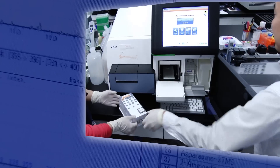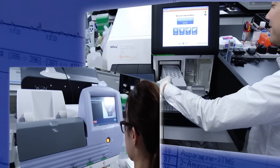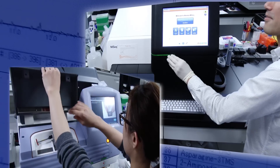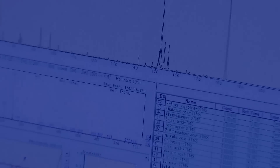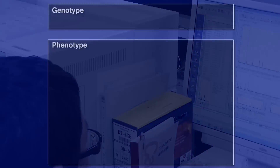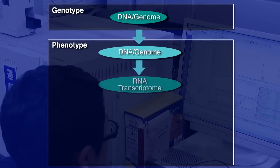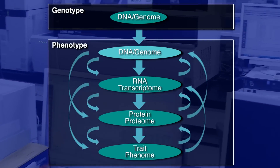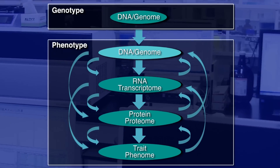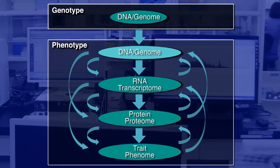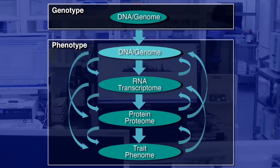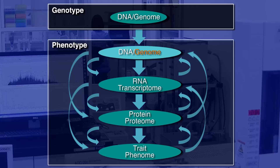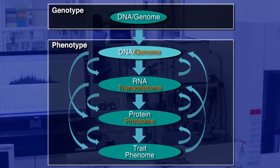These days, various high-throughput experimental technologies enable us to evaluate all of these variations in multiple layers — DNA layer, RNA layer, and protein layer — all together. We call this kind of approach to handle the whole set of each layer as genome, transcriptome, and proteome.